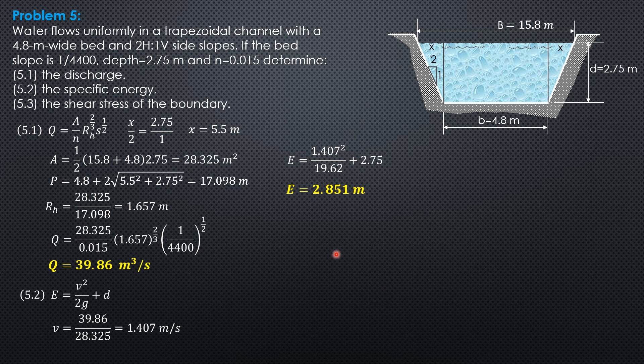Finally, the shear stress of the boundary. Specific weight of water, hydraulic radius times slope of the channel bed, which is also the slope of the energy gradient line for uniform flow. So 9,810, hydraulic radius 1.657, slope 1 over 4,400. So the shear stress of the boundary is 3.694 Pascals.